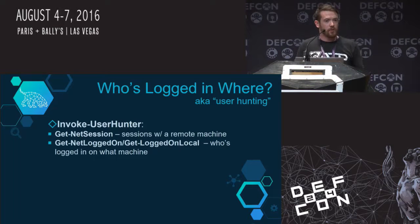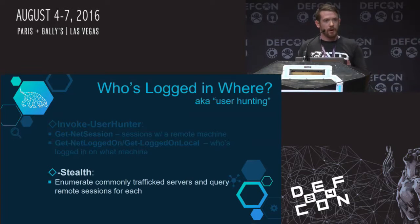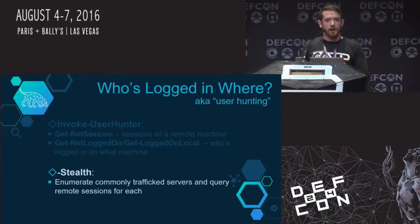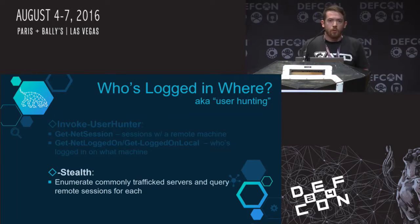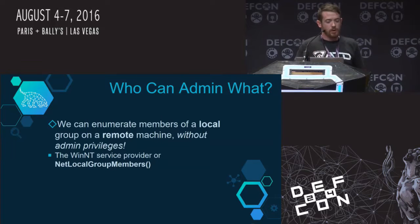You can run this against a domain controller or file server and get a nice mapping of who's logged in where. There's also a stealth option. By default, Invoke-UserHunter enumerates all machines in the domain and runs enumeration against every single machine — this can be extremely noisy if anyone is doing internal network-based monitoring. With stealth, we enumerate all user objects and pull out properties that may indicate highly trafficked file servers — things like profile path — then run NetSessionEnum against those systems. It's much faster but not quite as accurate. As for who can admin what — as an unprivileged user, we can enumerate the members of a local group on a remote machine without needing administrator privileges on that remote machine.